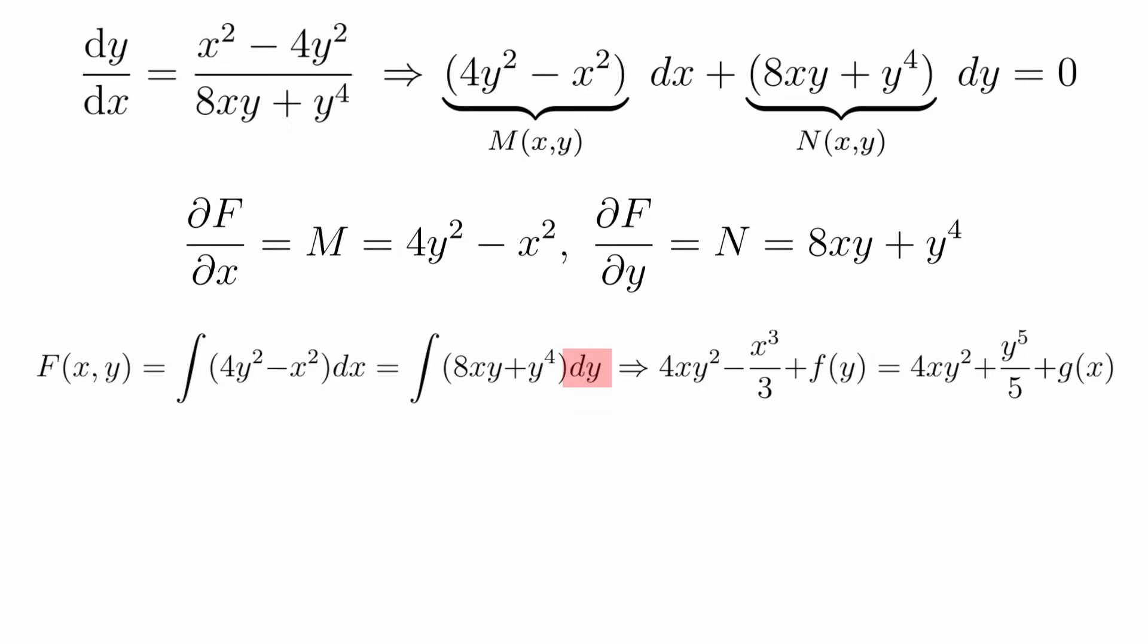Now for the second equation, integrating with respect to y this time, 8xy becomes 8x times y²/2, which is 4xy², and then y⁴ becomes y⁵/5, and then plus an arbitrary constant, now written as plus g(x) for the same reason.